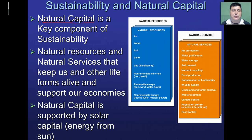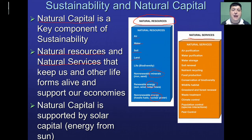The two big pieces of natural capital are natural resources and natural services. Natural resources are the things present in or produced by nature that we use — things like air, water, soil, land, living organisms, minerals, and energy sources. Natural services are the processes that nature performs which also produce something for us, like cleaning our air, producing food, or breaking down waste and recycling matter.